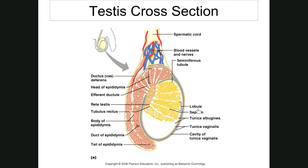Each compartment is called a lobule, and there are between two and three hundred lobules per testicle. The tunica albuginea forms the walls called septa, and the compartments created by those walls are the lobules.